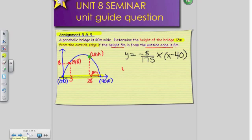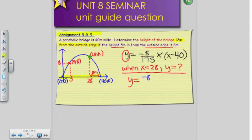And what we need to solve for, when x is equal to 28, what is my y value? That's all I'm looking for. When x is equal to 28, what is the height of the bridge? So I don't know my y, but I do know everything else. So, negative 8 over 175 times my x value, which is 28 over 1, times x minus 40, which is 28 minus 40.